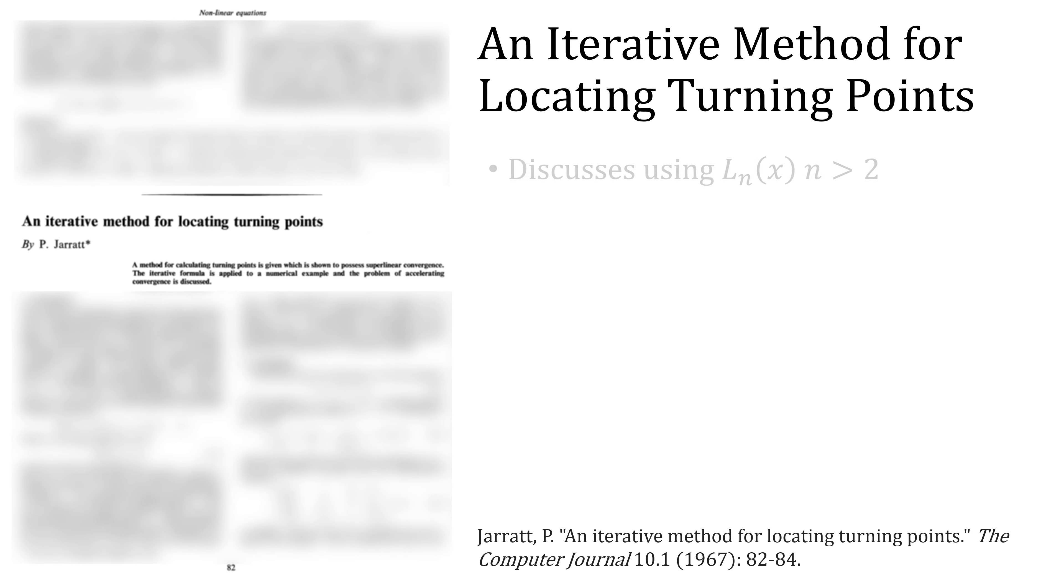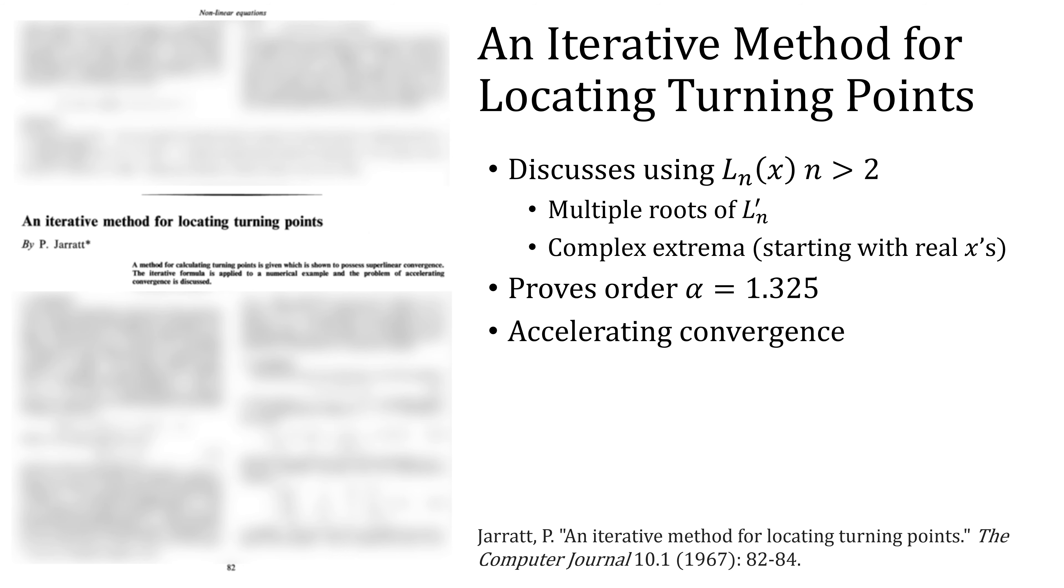Going back to Jarratt's paper, there is some discussion of using higher order Lagrange polynomials, but then this might lead to you having multiple roots for L prime as well as complex extrema for those roots. The paper also shows the order is 1.325. And Jarratt also discusses accelerating convergence and how you can't use Aitken's delta squared, providing instead two other ways, which I won't get into in this video.